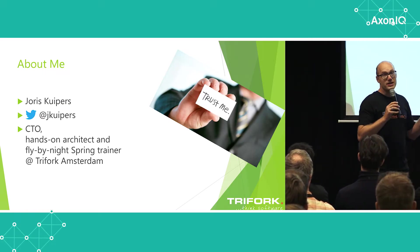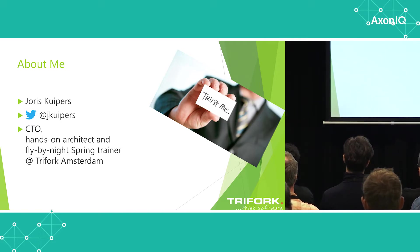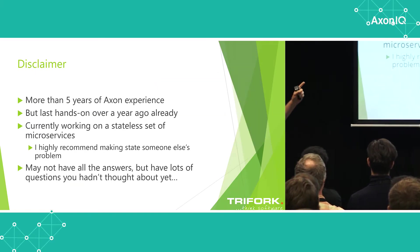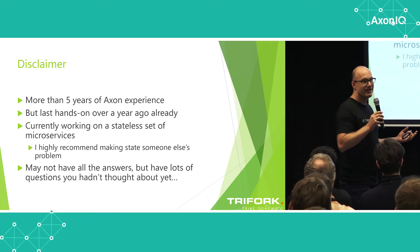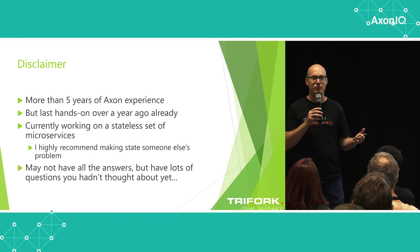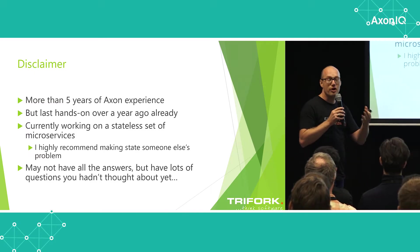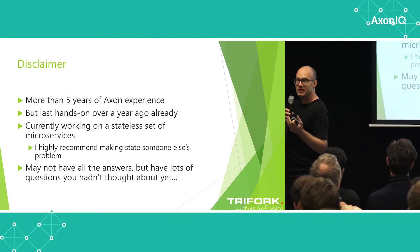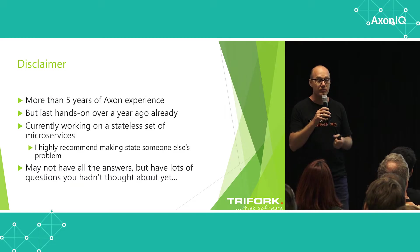It's been a while since I've done Axon — about the last year and a half already. I've been working on an integration platform for the Dutch Lotteries, which is a stateless set of microservices with no front end and no state to store. I'm just delegating and making state someone else's problem. In this talk, I'd like to discuss the things you will actually run into when building a stateful system with Axon.